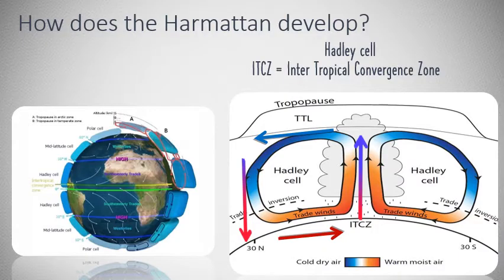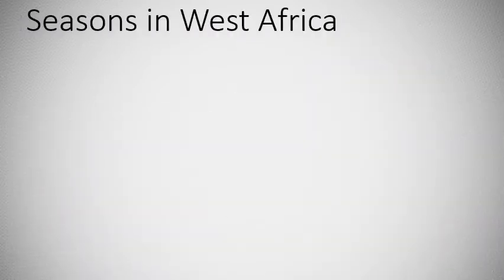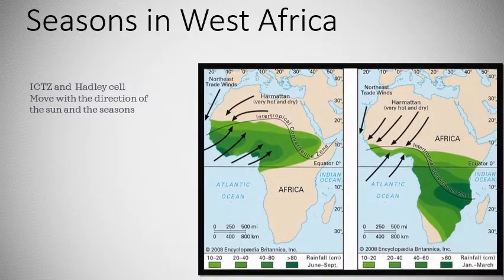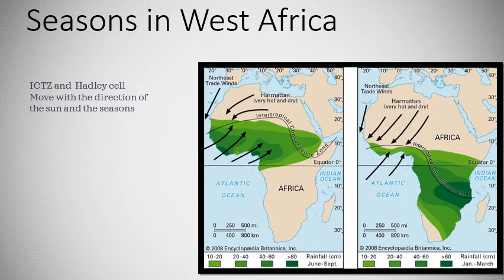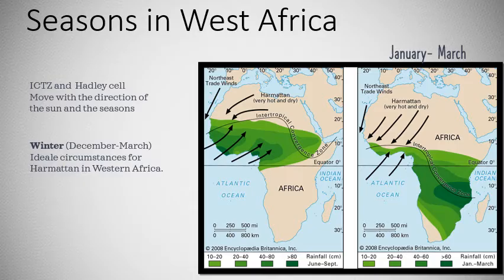The very warm, dry air then flows along the Earth's surface back to the low pressure region at the equator. These dry winds are called trade winds — blowing from the north-easterly direction in the northern hemisphere and south-easterly in the southern hemisphere. In West Africa this trade wind is called the harmattan. Due to the change of the seasons the ITCZ moves every year from a winter position to a summer position and back again, and the Hadley cell moves with the sun.